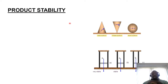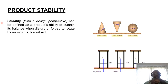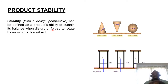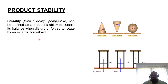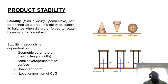From a designer's perspective, stability can be defined as the product's ability to sustain its balance when disturbed or forced to rotate by some form of load. We can then proceed to look at what variables impact a product's stability.